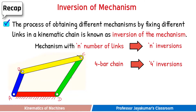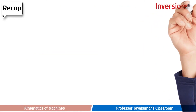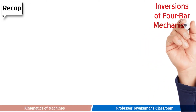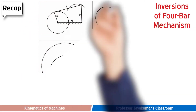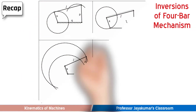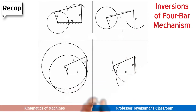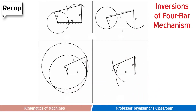The 4 inversions of 4-bar chain are illustrated in this diagram. Let S be the length of the shortest link, L the length of the longest link, and P and Q are lengths of the other 2 links. As you can see, by fixing different links one at a time, we get 4 different mechanisms.